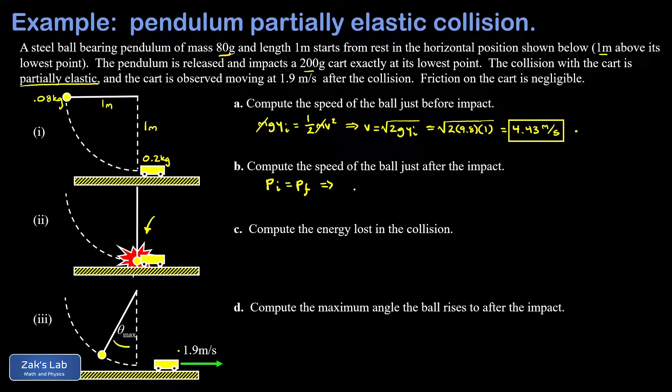So the initial momentum is going to be the mass of the pendulum bob, 0.08 kilograms times its initial speed before the collision, 4.43 meters per second. Then in the final state, right after this impact, before the pendulum bob starts to rise above the ground, I have the pendulum bob moving to the left and the cart moving to the right. The rightward momentum here is the mass of the cart, 0.2 kilograms times its final speed, which again is 1.9 meters per second after the collision.